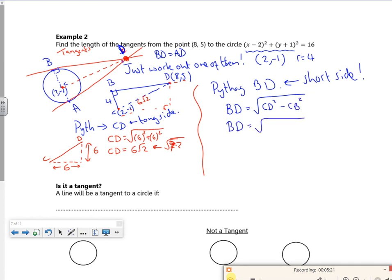So B to D will be my root 72 all squared minus the radius, which is 4 squared. So B to D will be 72 minus 16. So what's that going to give me? 56, which is 2 root 14. So that's the length of the tangent.